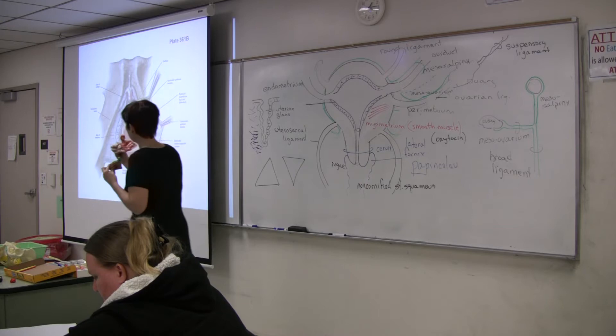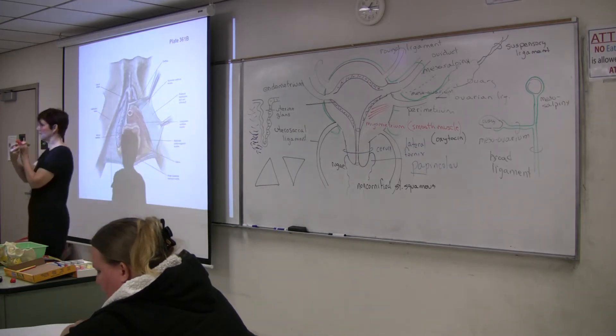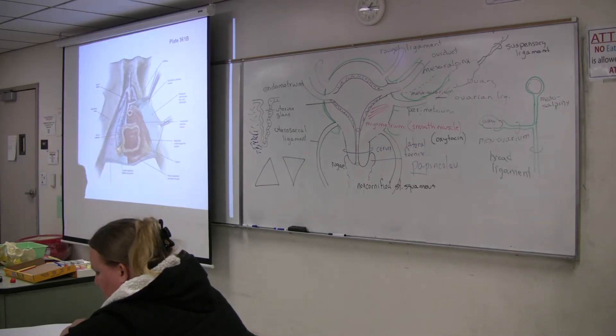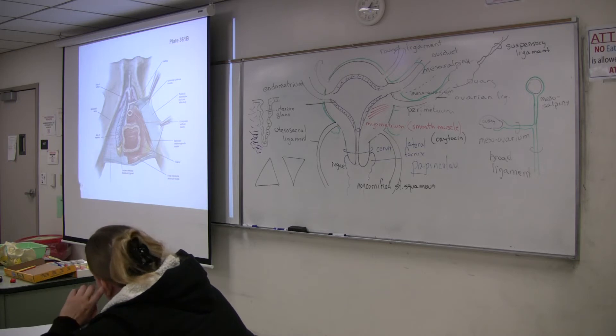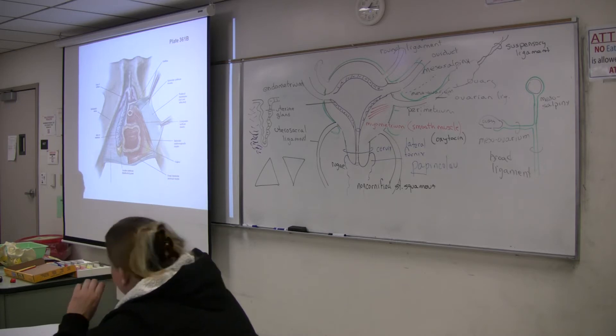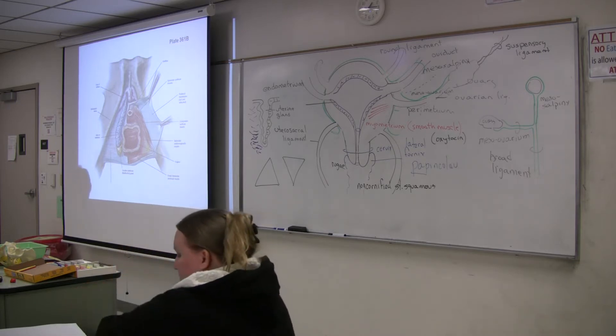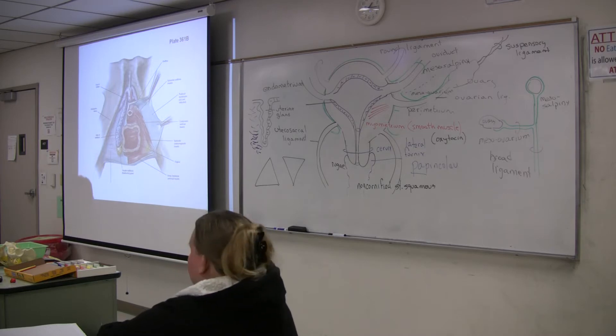So on this model here, this is the sagittal section. Here's the uterus. Looking externally, this would be the labia minora right here. Just medial deep to that, here would be the corpus cavernosa, the crus running along here, the bulb, and back here is the bulbourethral gland.